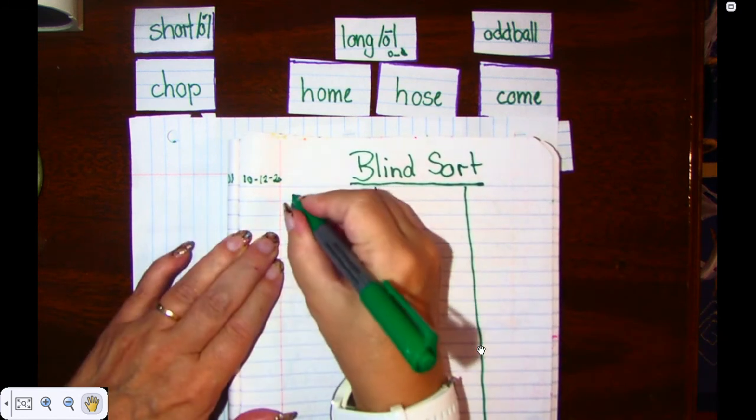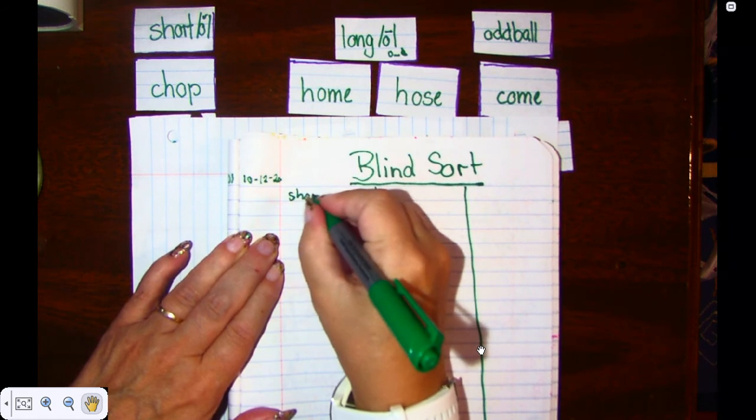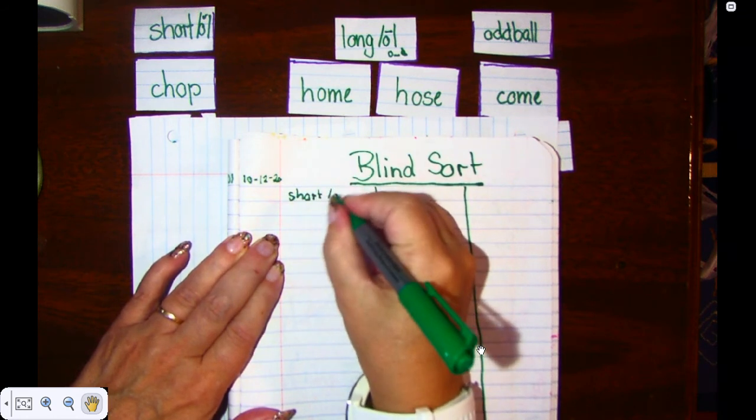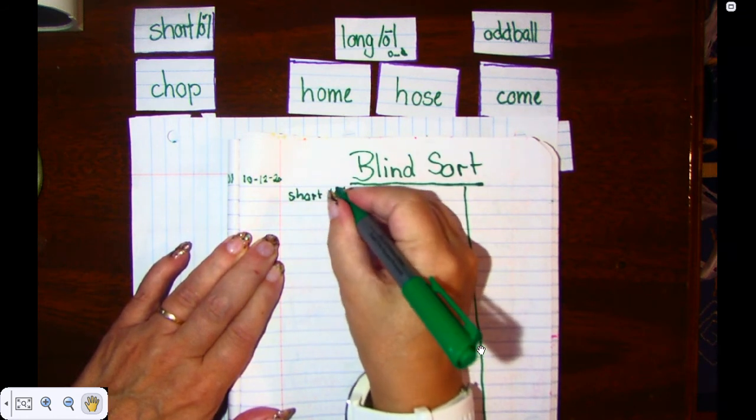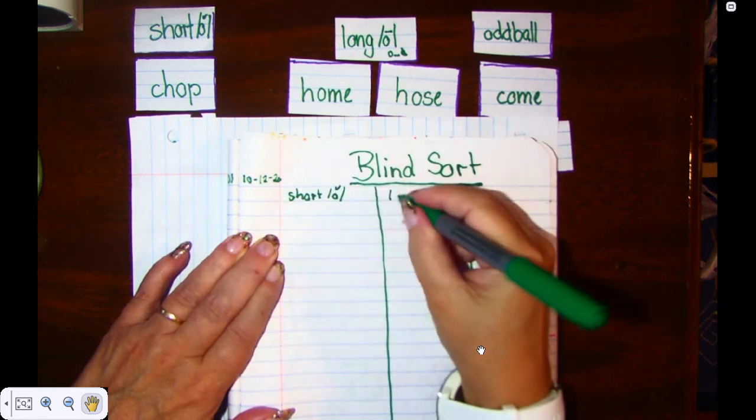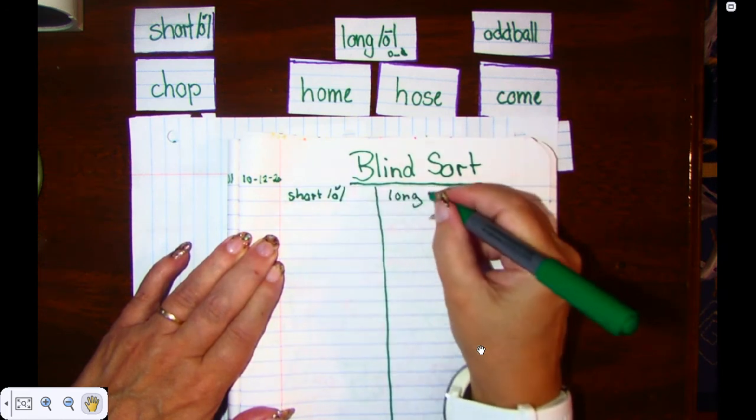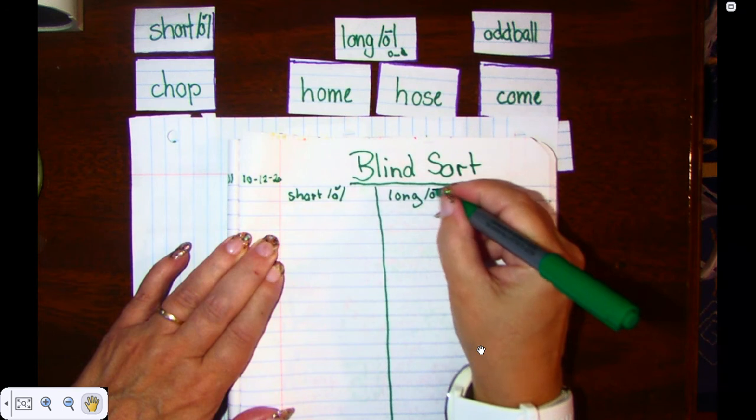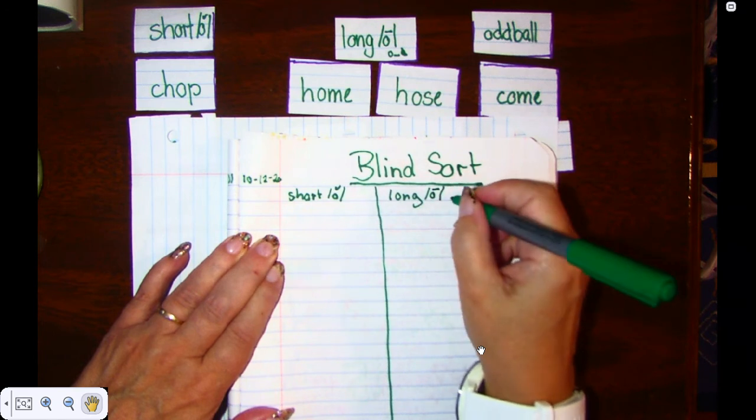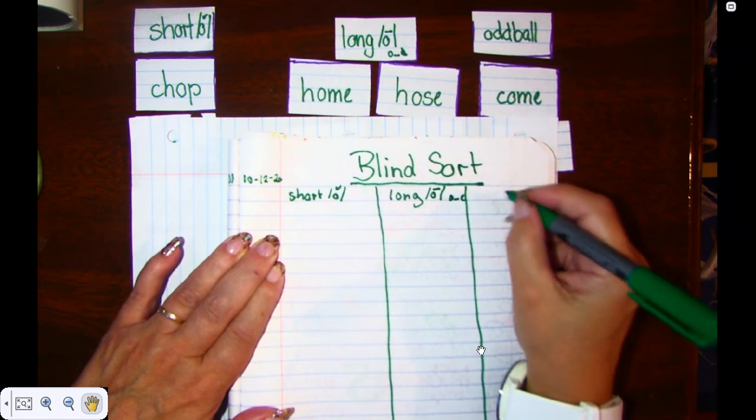And I need to write down short O, long O, and that's the O consonant, silent E, and oddball.